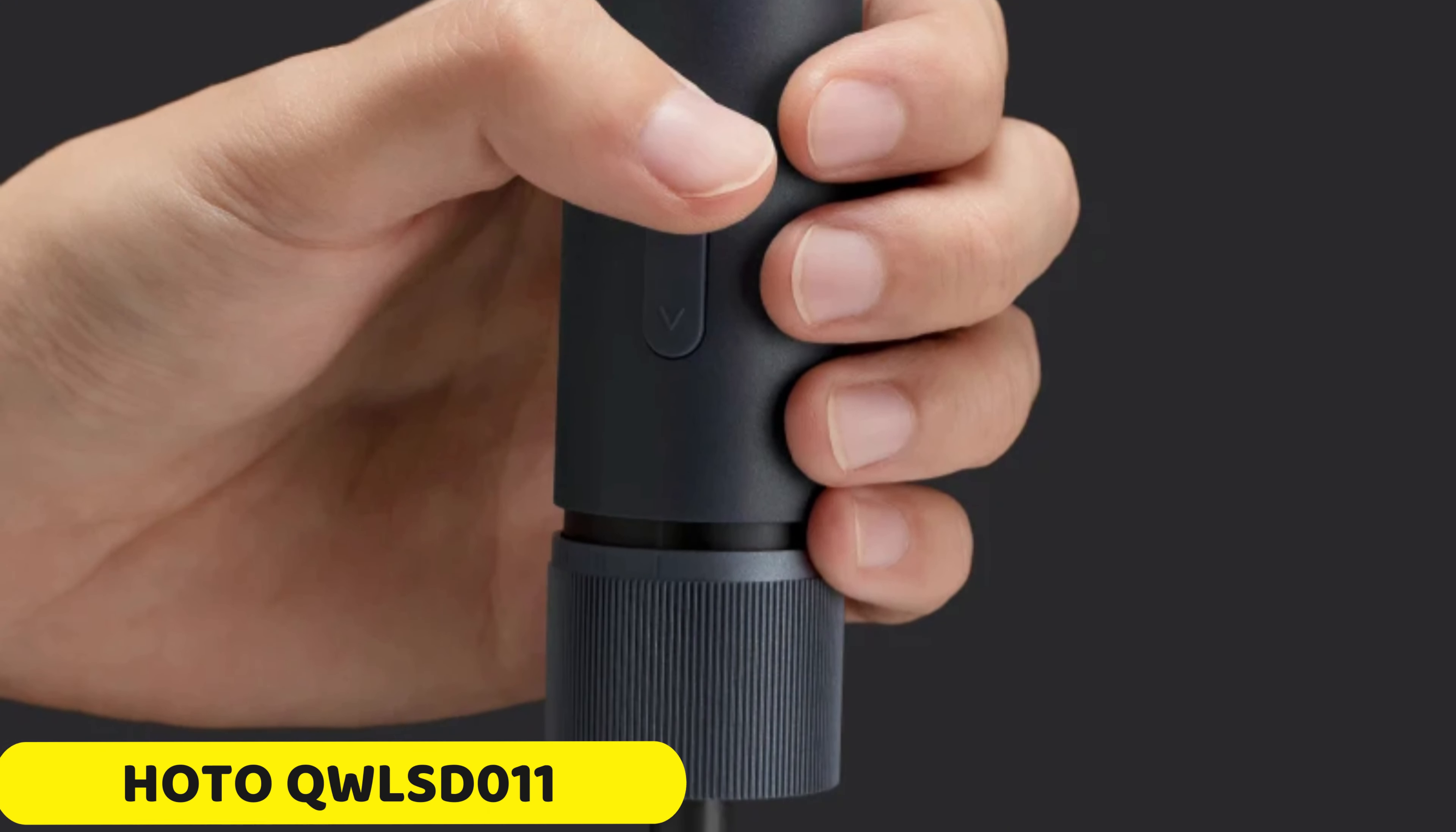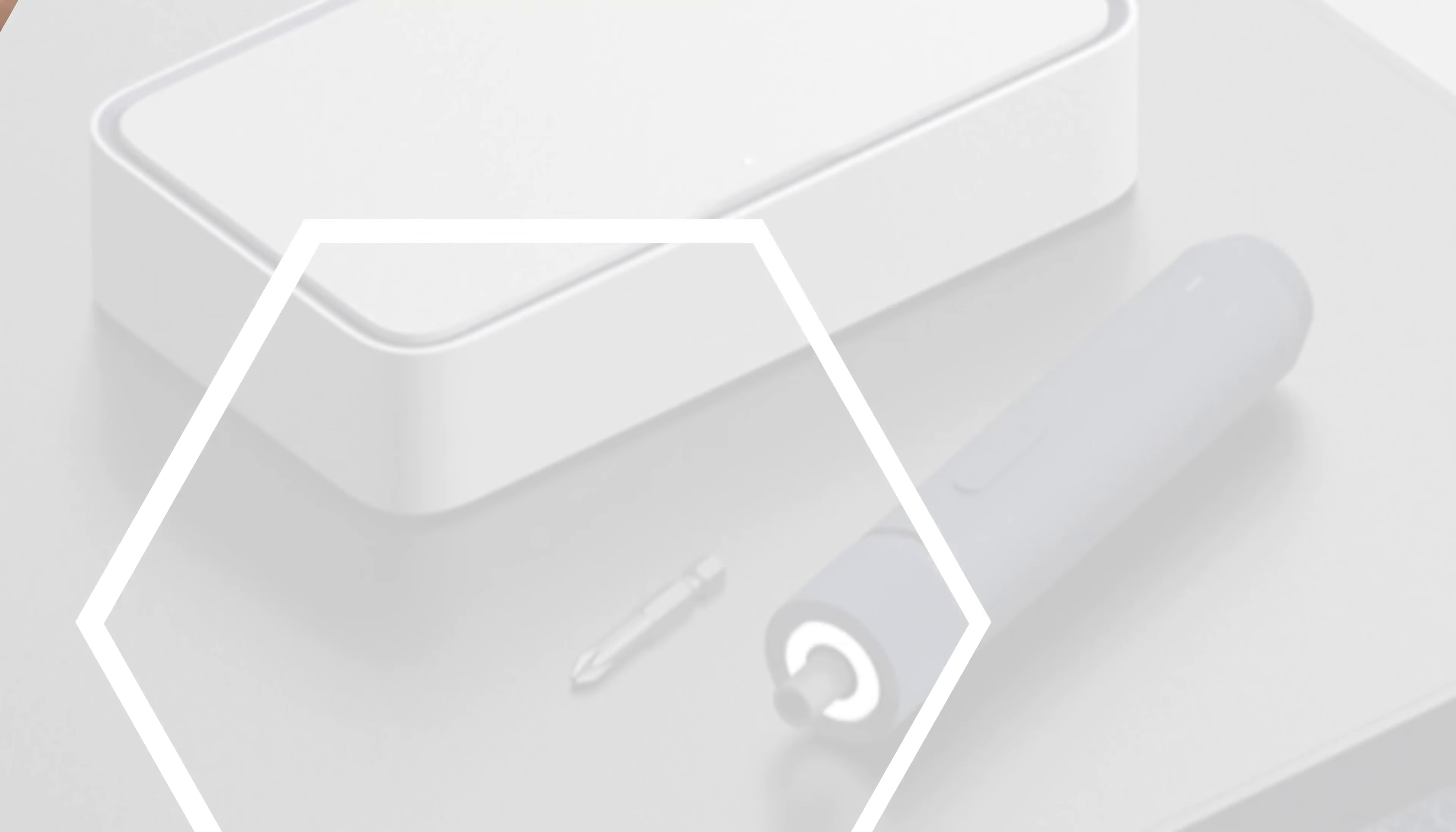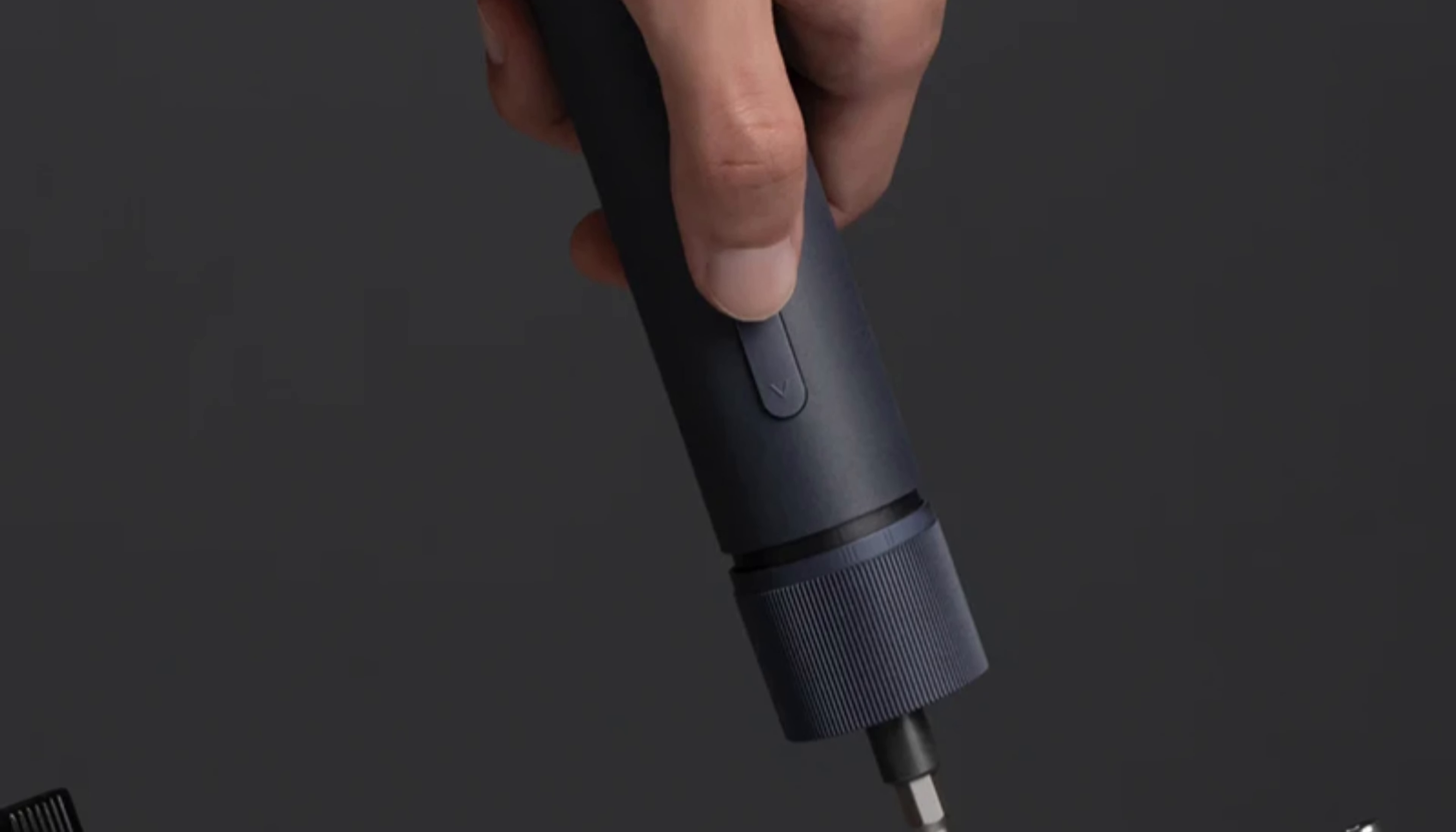Number 3: HOTO QWLSD011 Electric Screwdriver Set. The HOTO QWLSD011 is a reliable electric screwdriver set designed for DIY enthusiasts and professionals. It operates on DC power, providing consistent and reliable performance for various tasks. The versatile set of screwdriver heads is suitable for a wide range of applications, from furniture assembly to electronics repair. The ergonomic design reduces fatigue and allows for precise control.